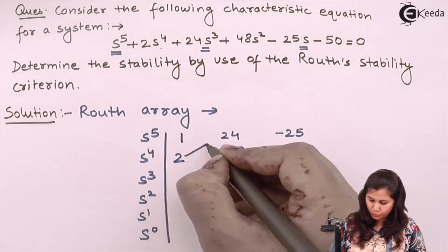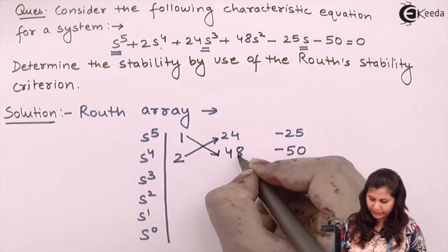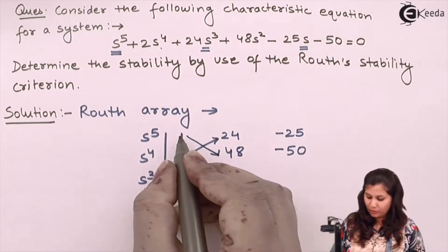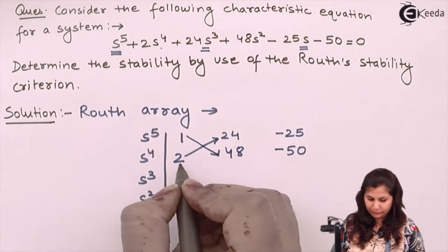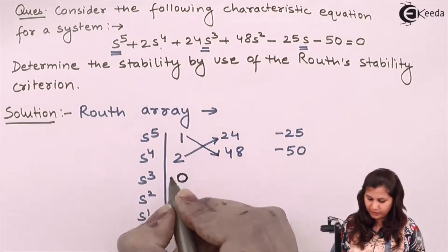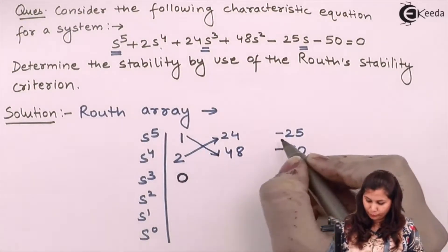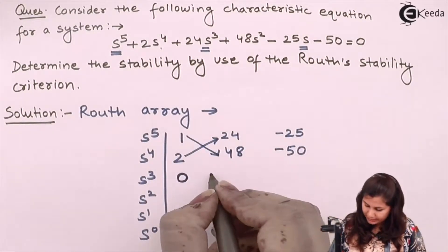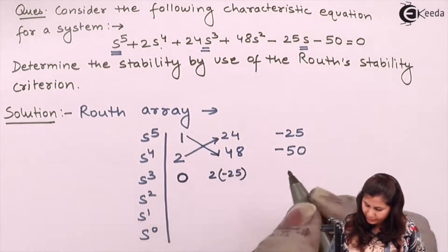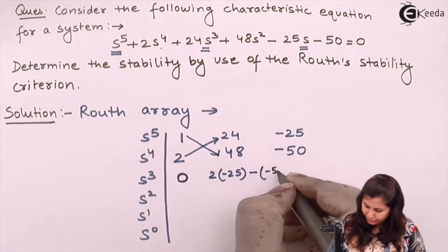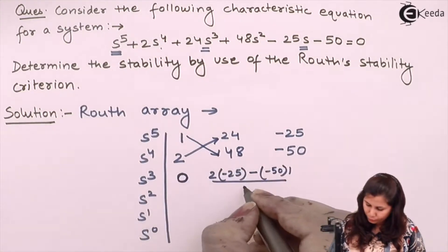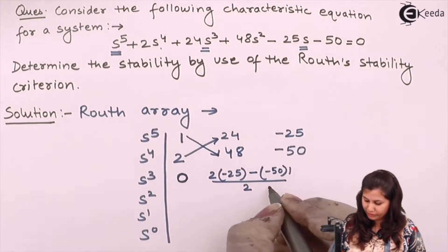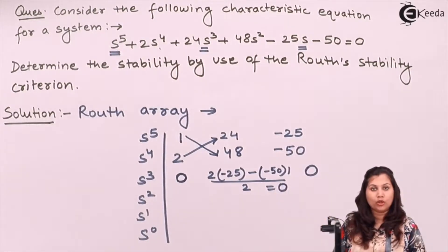Now obtaining the S3 row: it will be obtained by multiplying 2 into 24 then minus 1 into 48 divided by 2, so 2 into 24 is 48 minus 1 into 48 is 48, divided by 2 gives coefficient 0. Next we have 2 into minus 25 minus 1 into minus 50 divided by 2, giving minus 50 plus 50 over 2, which equals 0.